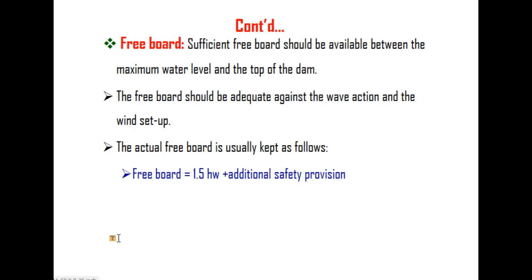Freeboard. Sufficient freeboard should be available between the maximum water level and the top of the dam. The freeboard should be adequate against wave action and wind setup. The actual freeboard is kept as: freeboard = 1.5 × wave height + additional safety provision.